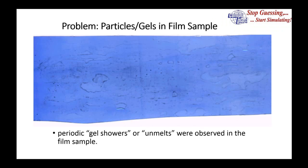Moving to the first problem: here's a sample of film with particles. People often refer to any defect in a film sample as gels, which isn't really correct. Gel should be reserved for a degraded or cross-linked polymer. In this particular case, the gel showers were actually unmelts in the product, observed by taking a sample, bringing it above the melting temperature, and watching the so-called gels disappear, indicating they were unmelts.